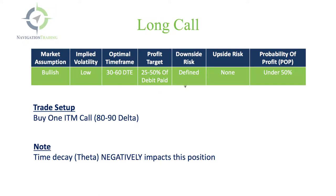Your downside risk is defined, so you know exactly what your risk is on the position when you put it on. And of course, no upside risk — if the underlying symbol moves up, you're going to be in the profit. That upside is not defined either, so there's unlimited upside potential, theoretically.